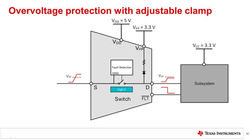Some TI protection switches include secondary voltage rails to which the output voltage can be clamped. This enables the switch to isolate two subsystems with different voltage levels. In these switches, non-fault channels continue to operate normally with little impact on performance.